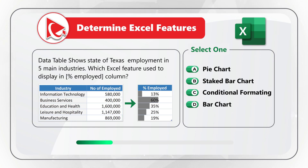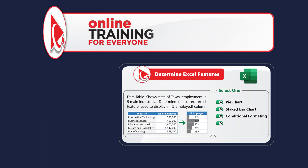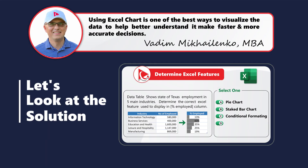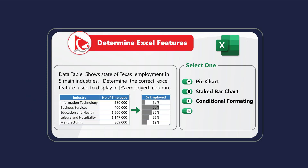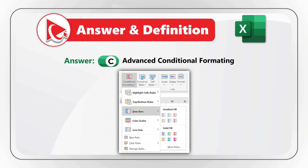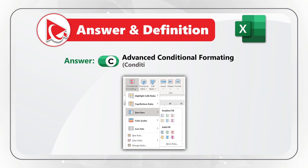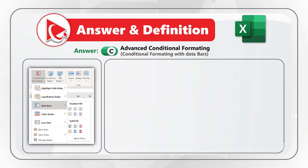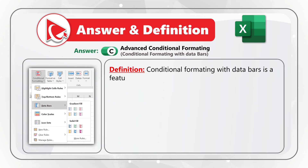Give yourself five to ten seconds — about as much time as you get on a real test. I believe the correct answer is choice C, advanced conditional formatting, specifically conditional formatting with data bars.